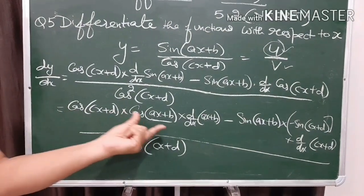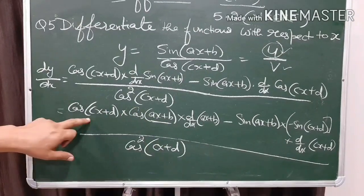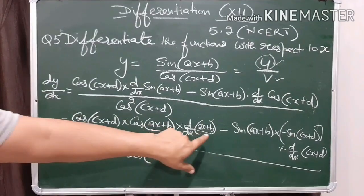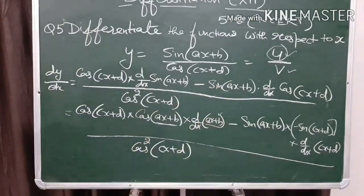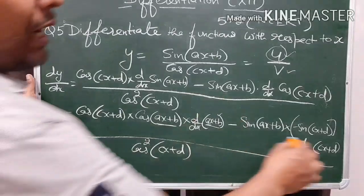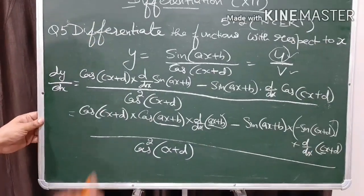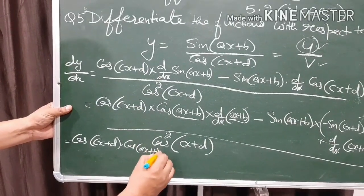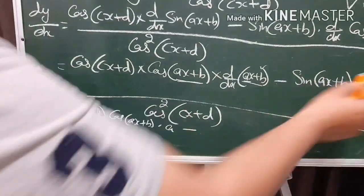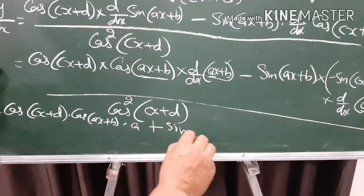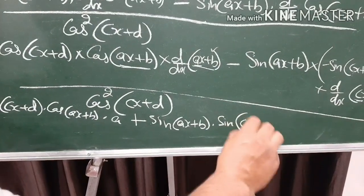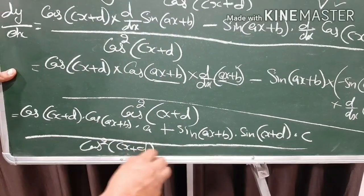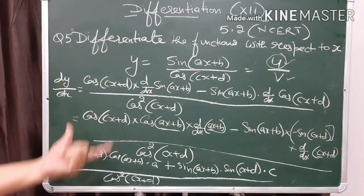The two cosine terms have different angles so we cannot multiply them together. The derivative of ax plus b: b is constant so its derivative is 0, and the derivative of ax is a. Similarly, the derivative of cx is c. So the final answer is cos(cx plus d) times a times cos(ax plus b) plus c times sin(ax plus b) times sin(cx plus d), all divided by cos²(cx plus d).